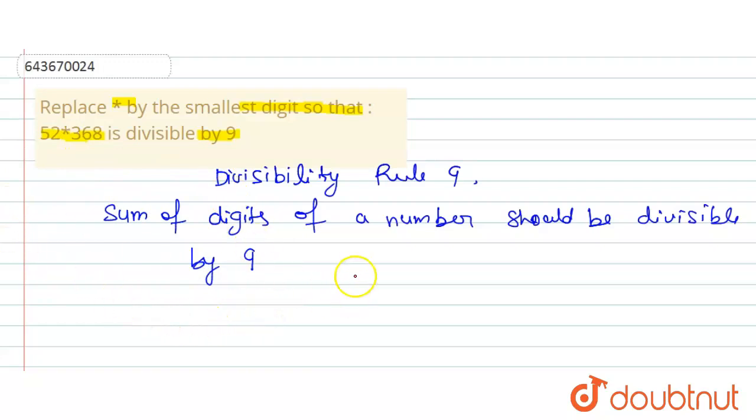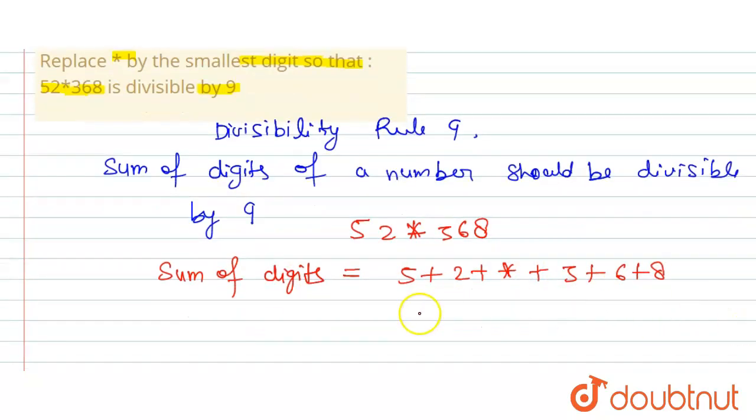Here the number given is 52*368. So the sum of digits will be equal to 5 + 2 + * + 3 + 6 + 8. 5 + 2 is 7, plus 3 is 10, plus 6 is 16, and plus 8 is 24. So this is equal to 24 + *.